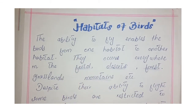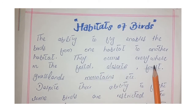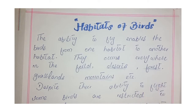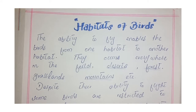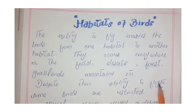The ability to fly makes birds capable of moving from one habitat to another. They are found everywhere in the field — in forests, grasslands, mountains, deserts, and more. They are found in crops, in deserts, in jungles, in grasslands, and in mountains.